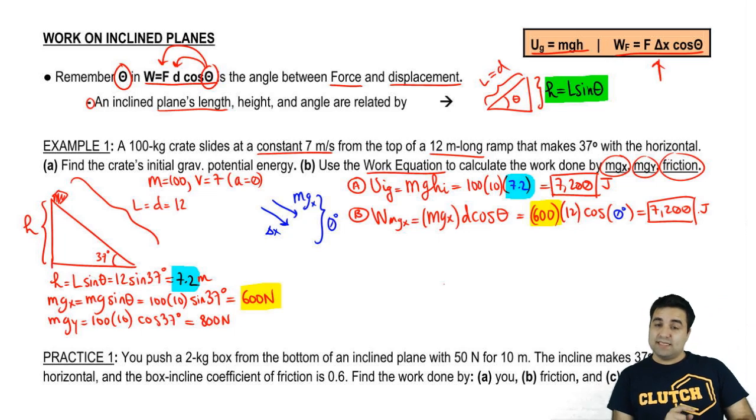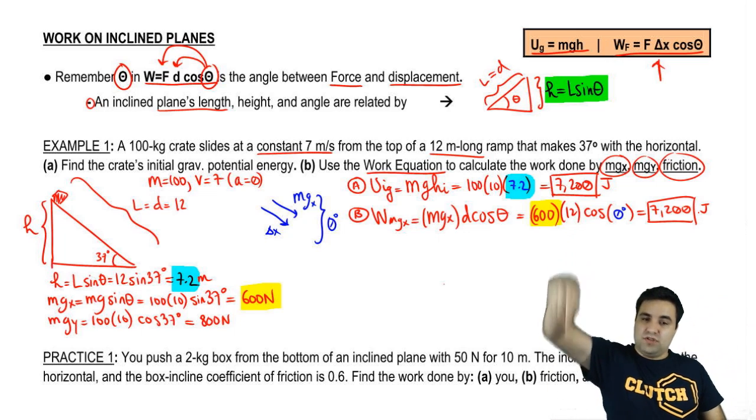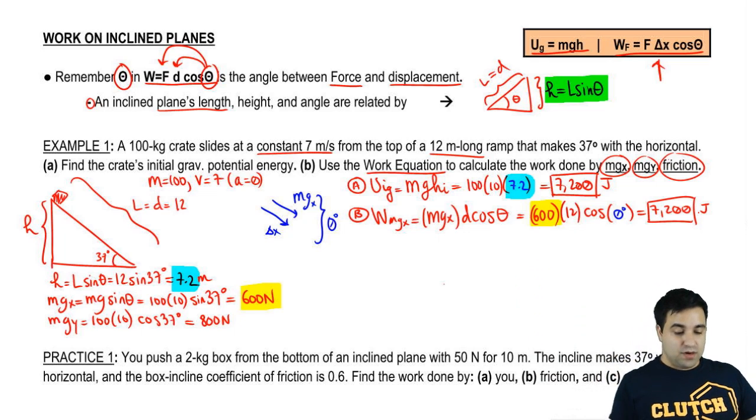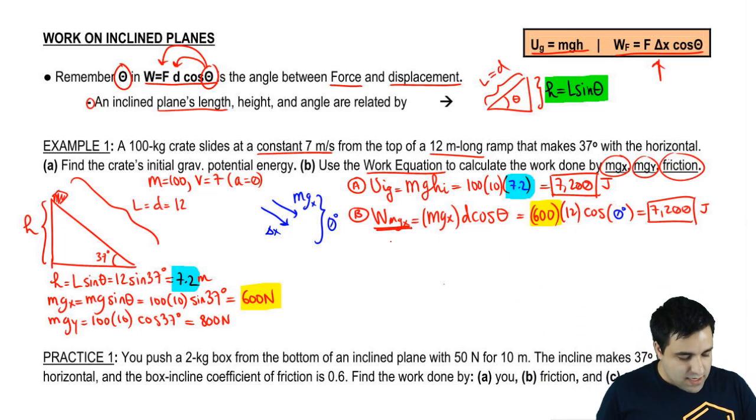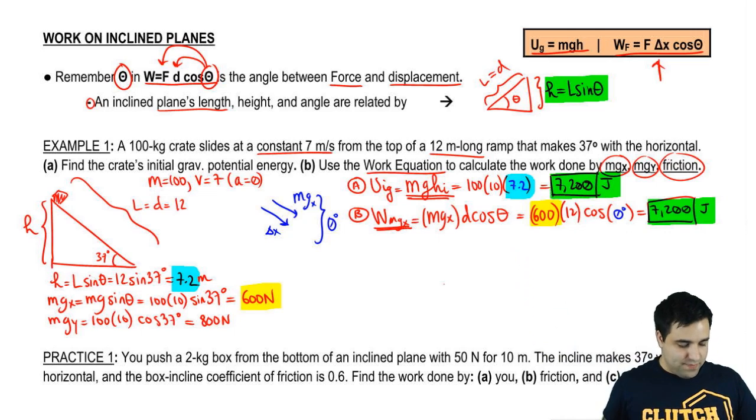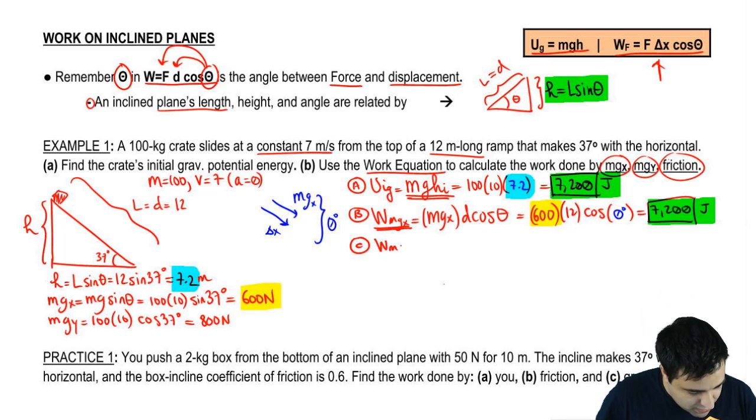And when you multiply all of this, you get that the work done by MGX is 7200 joules. I got a positive, which should make sense, because even though I'm not going directly down, I am losing height. And if you remember, the work done by MG is MG delta H. So if I had an initial energy of 7200, the work done by MG should be 7200 if I fell the whole way down. So that kind of matches up.